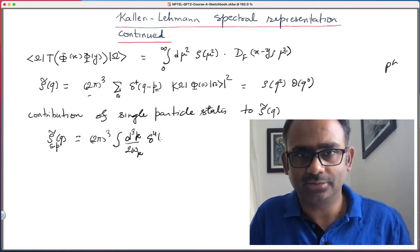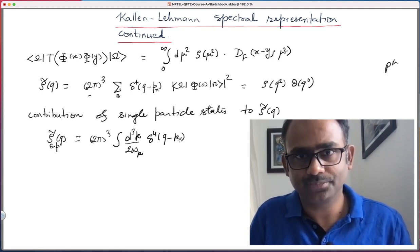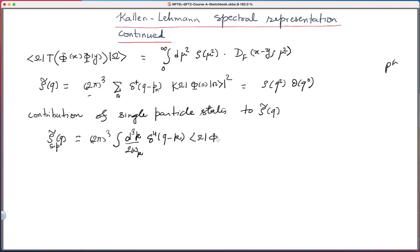Now I should put delta 4, so delta 4 q minus, now p n gets replaced by k. And then you have omega phi 0 mod square. That is fine. And then other contributions not to this but to rho tilde q coming from multi particle states. This is nice.